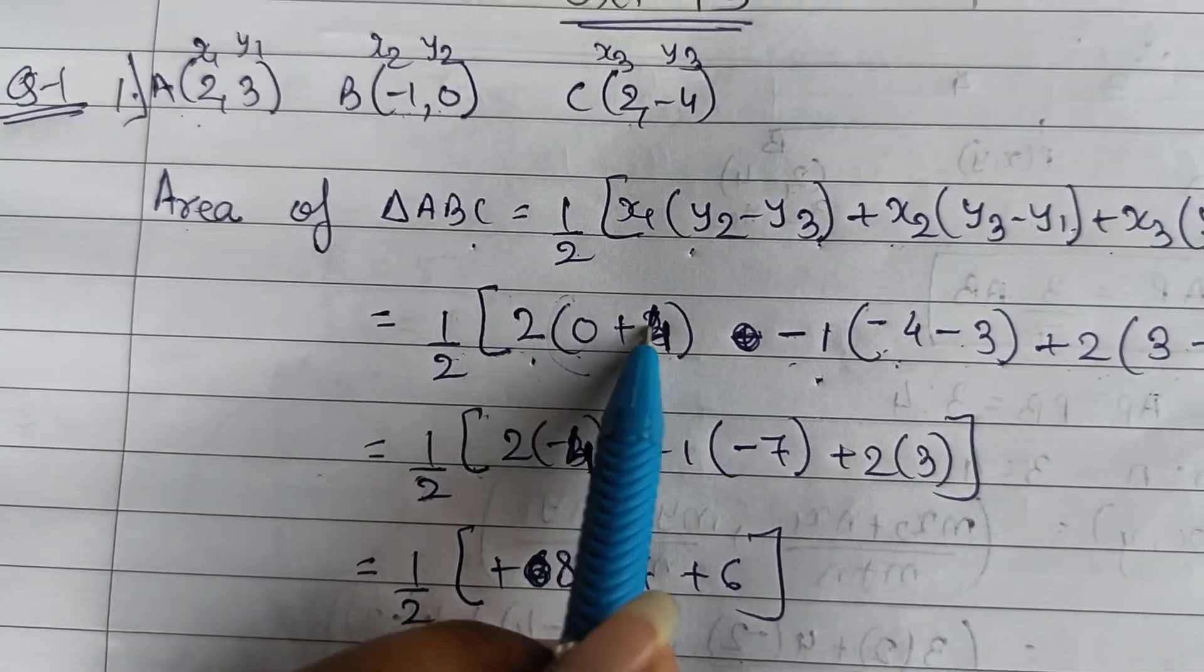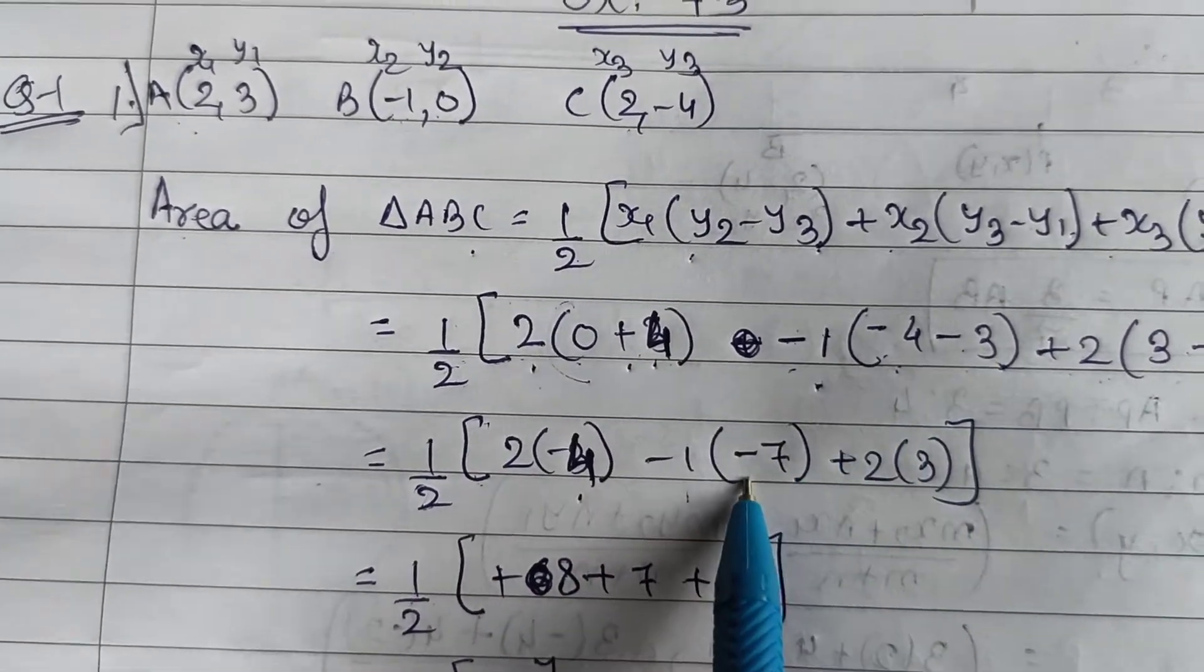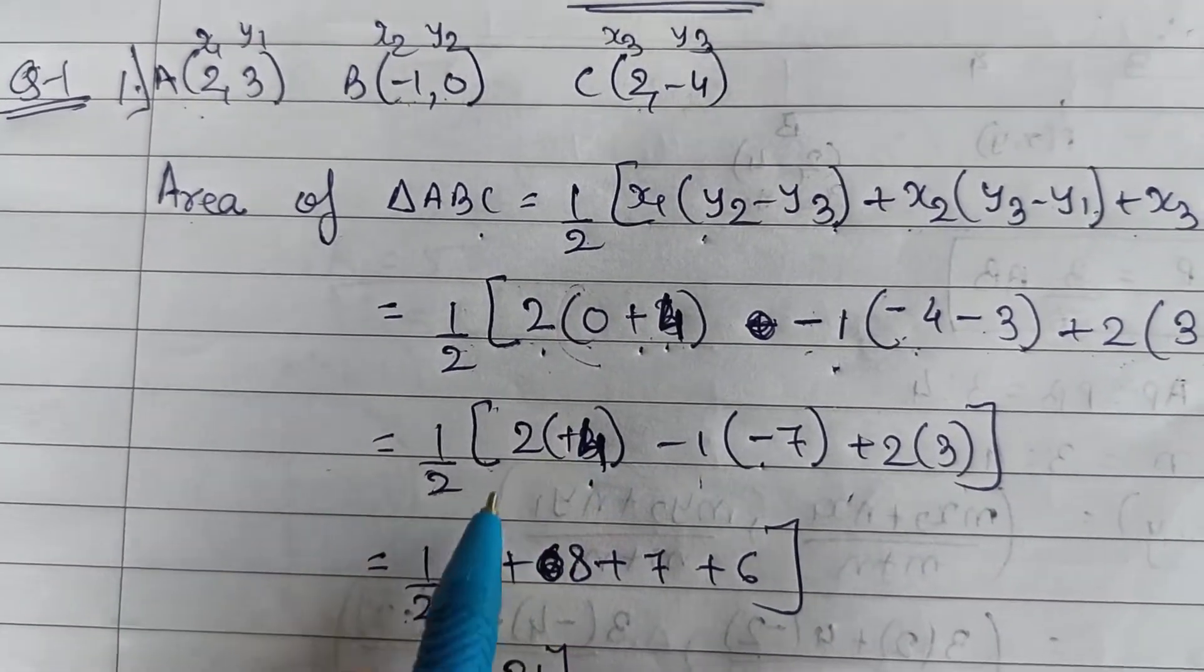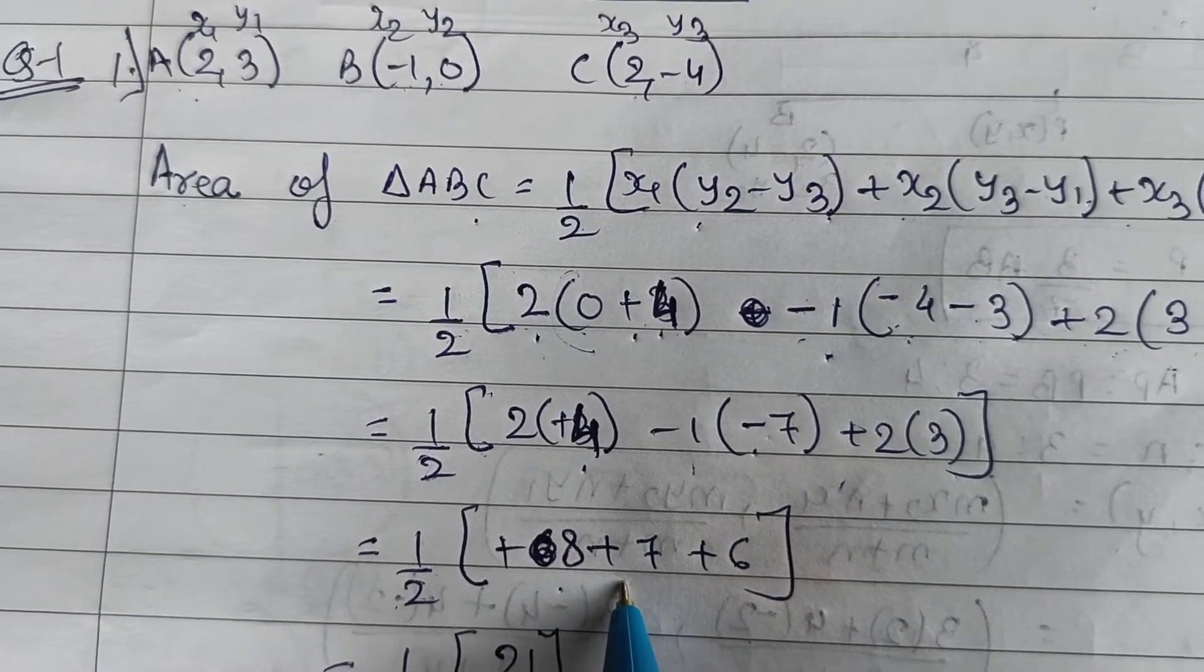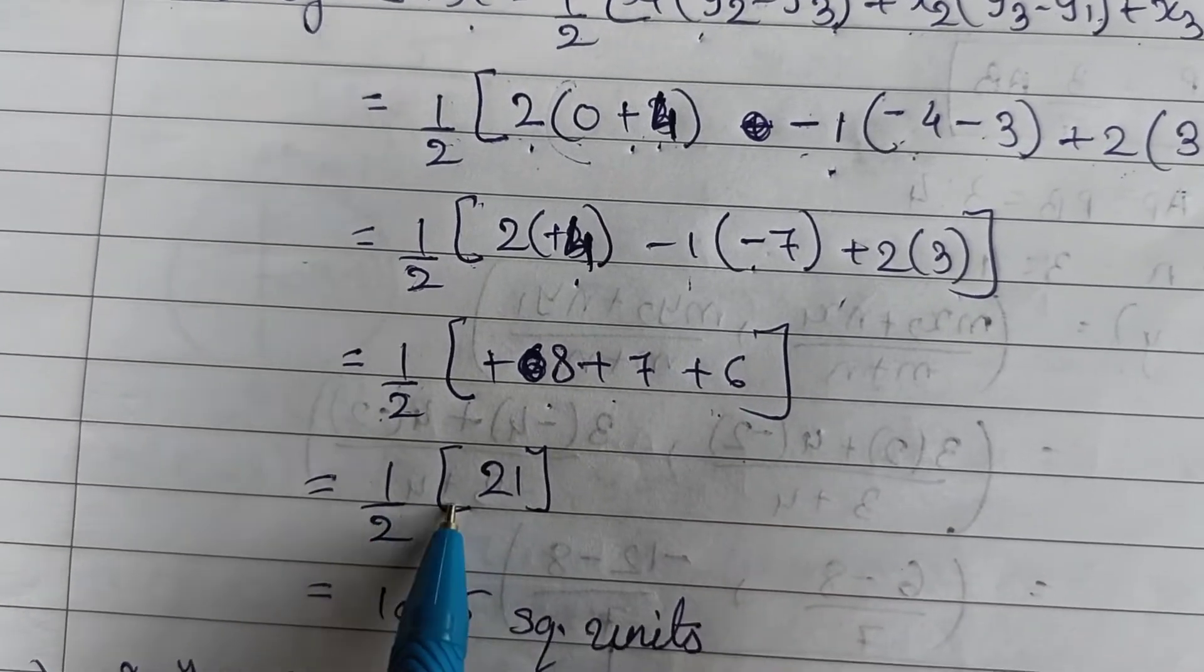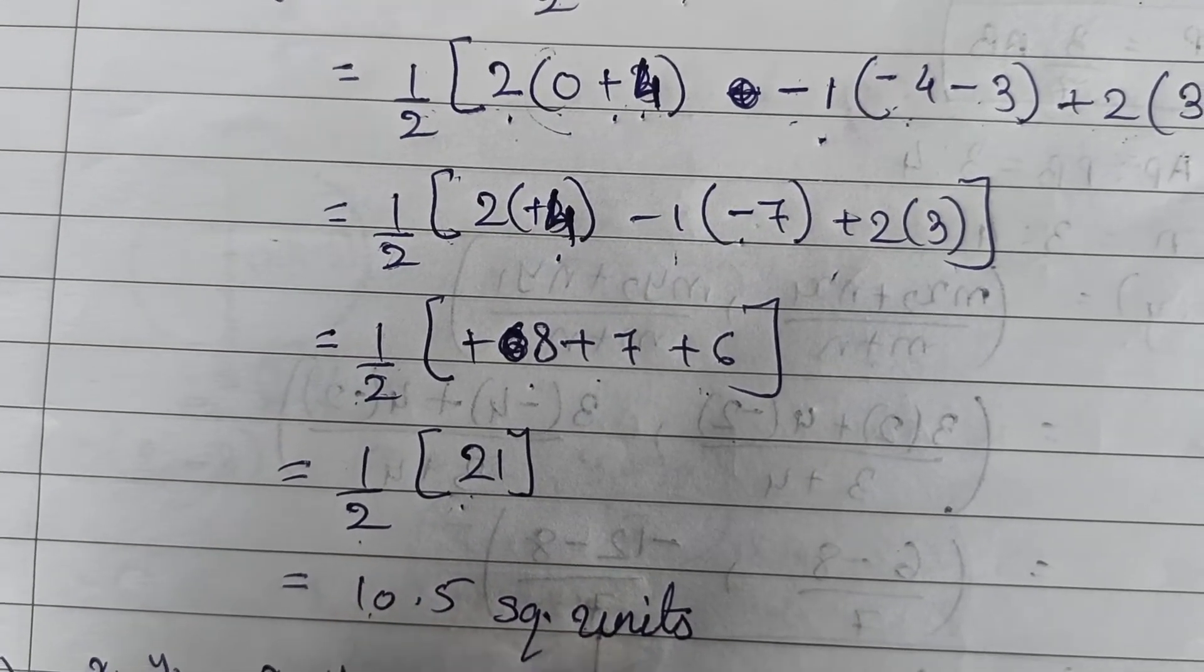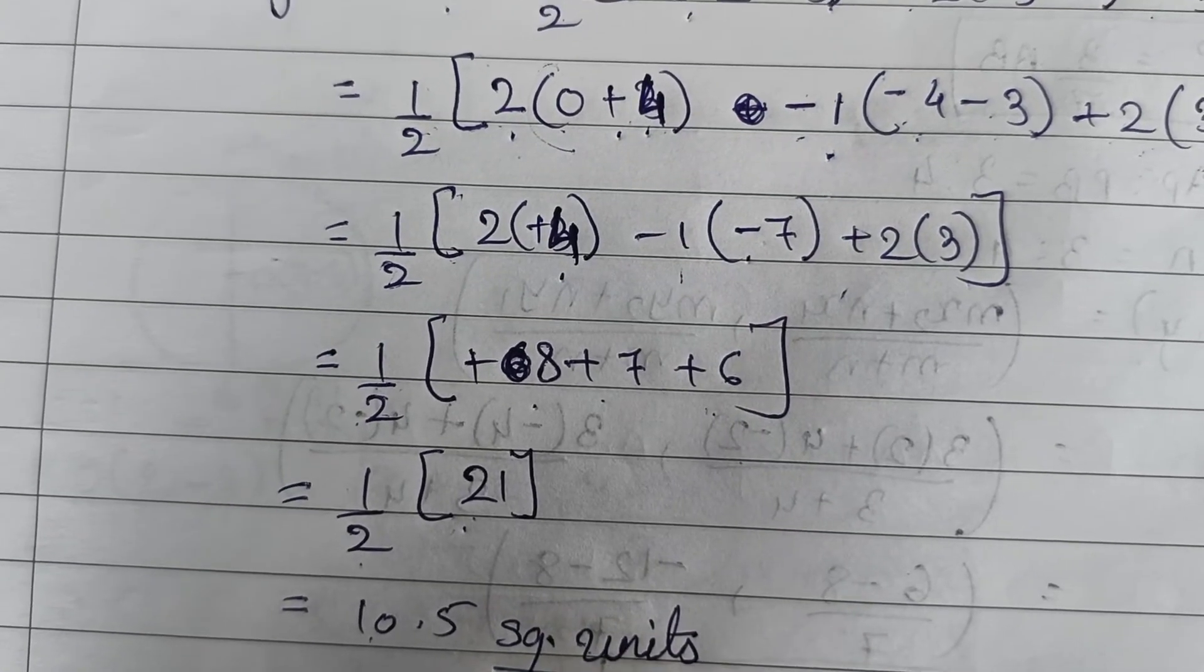That is half, 2 into 0 plus 4 is 4, minus 1 into minus 7, that is plus 7, plus 2 into 3. So this will give you half into 2 fours will be 8, minus 1 minus 7 it will give you plus 7, and 2 threes it will be 6. So this is half into 21. When you will do the total of it it will come 21, and 21 divided by 2 it will be your 10.5 square units. If you are having area of triangle, so you have to write unit as square units.